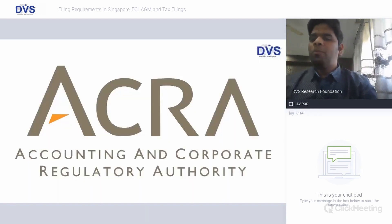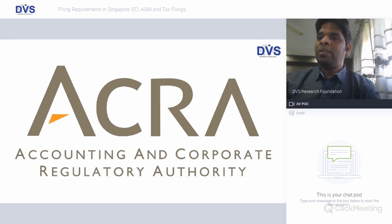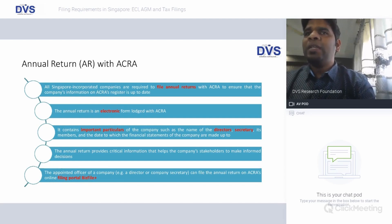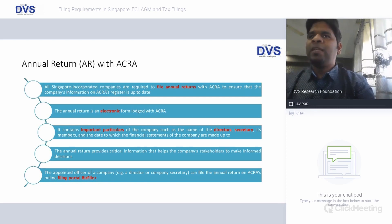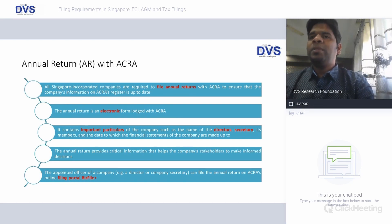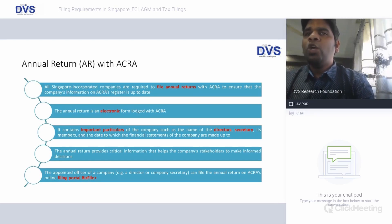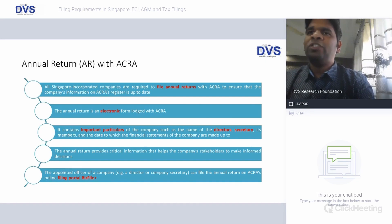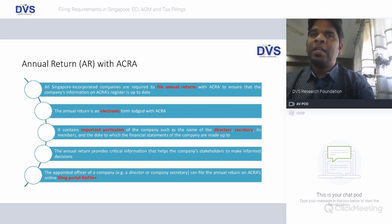We now move on to regulations by ACRA, the Accounting and Corporate Regulatory Authority. We'll discuss the annual returns the company must file as well as the AGM that must be held. All Singapore-incorporated companies are required to file annual returns with ACRA to ensure that the company's information on the ACRA register is up to date. The annual return includes not just business activities but also the particulars of shareholders and directors updated every year, ensuring all registered information — including passport number changes or changes in citizenship — is current. There is a penalty for late filing.